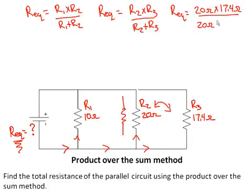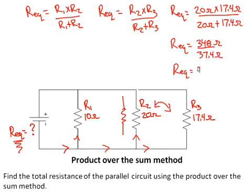So R equivalent equals 348 ohms divided by 37.4 ohms. R equivalent equals 9.3 ohms. So essentially we took these two and reduced it down to something that's 9.3 ohms.